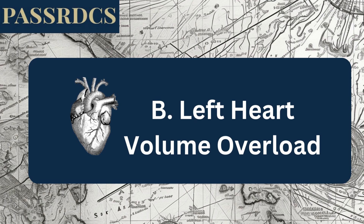A small VSD generally doesn't overload the right ventricle very much. The blood recirculates back through the lungs to the left heart, which sees most of the volume.